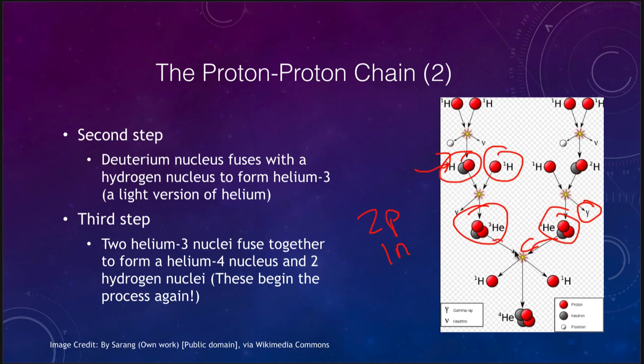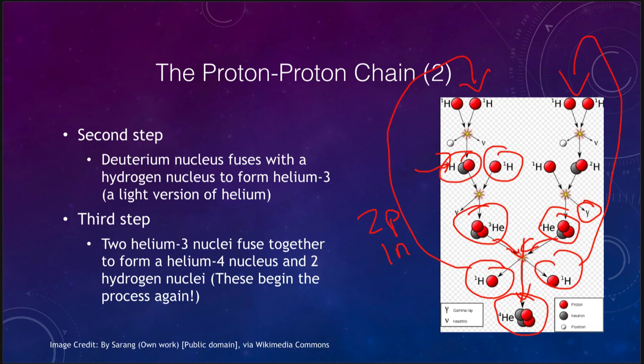Finally, in the last step, we take two of these helium-3 nuclei and combine them together. That forms the stable helium-4 nucleus, which is ordinary helium, and two protons. These two protons go back out at high speeds and begin the process all over again. In net, we've taken four hydrogen nuclei, produced one helium nucleus, and produced some energy.